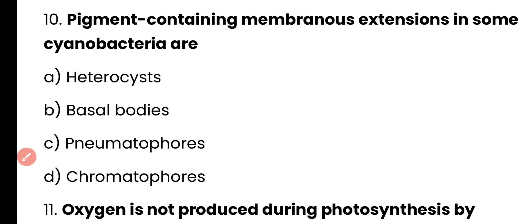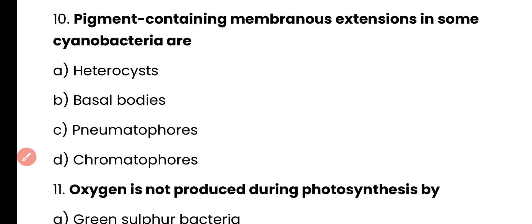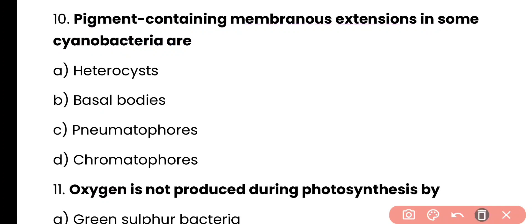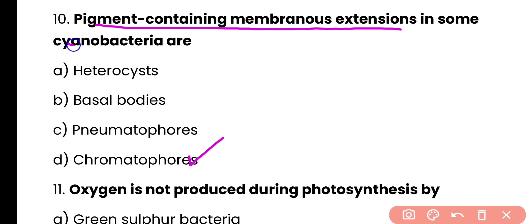Question number 10. Pigment-containing membranous extensions in some cyanobacteria are: heterocyst, basal bodies, pneumatophores, or chromatophores? Correct answer is option D. Chromatophores are the pigment-containing membranous extensions in cyanobacteria and they help in photosynthesis.